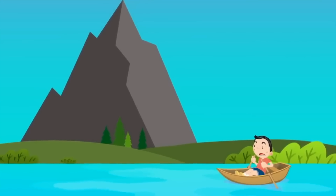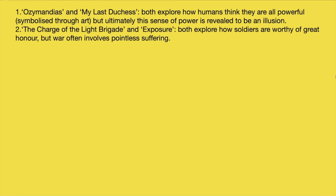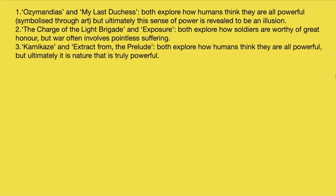With those two things in mind, here are the pairings I would make — though remember it depends on the question and there are lots of different ways to do this. Ozymandias and My Last Duchess both explore how humans think they are all-powerful, symbolised through art in both poems, but ultimately this sense of power is revealed to be an illusion. The Charge of the Light Brigade and Exposure both explore how soldiers are worthy of great honour but war involves pointless suffering. Kamikaze and Extract from the Prelude both explore how humans think they are all-powerful but ultimately it is nature that is truly powerful.